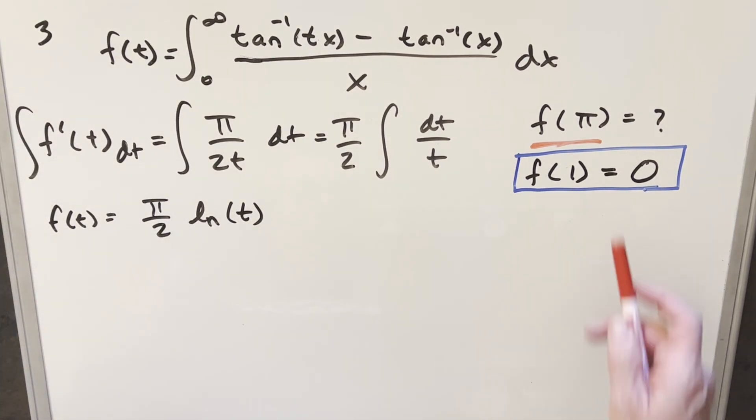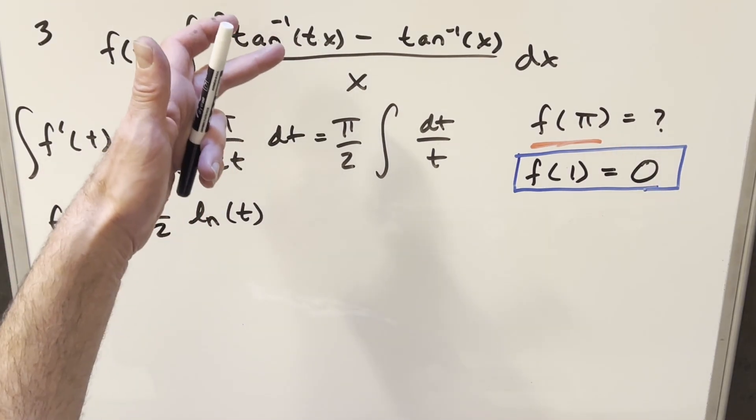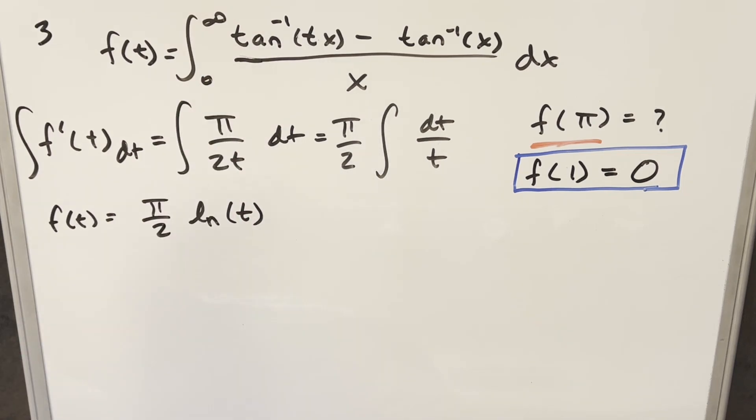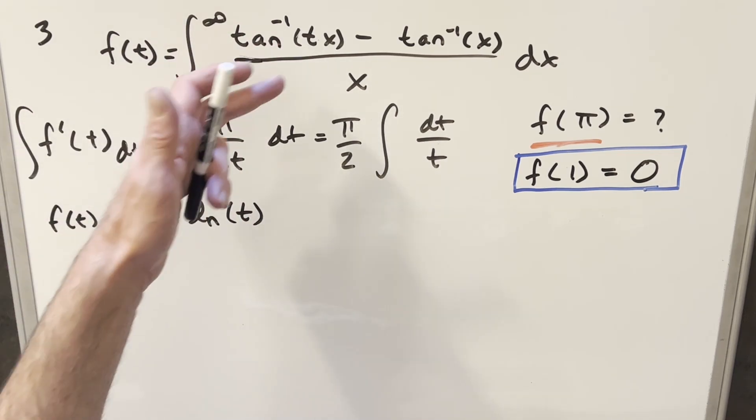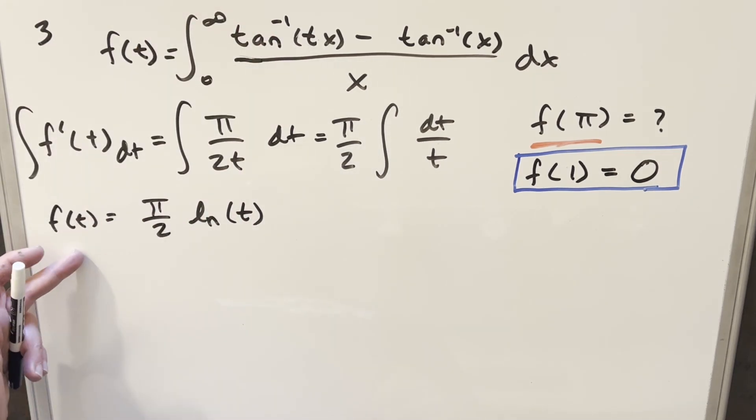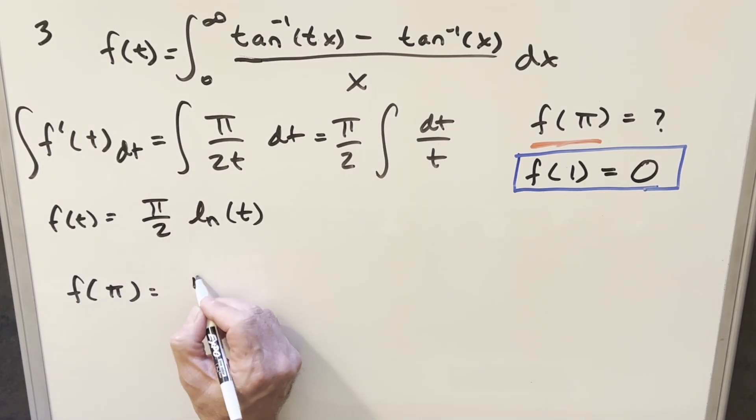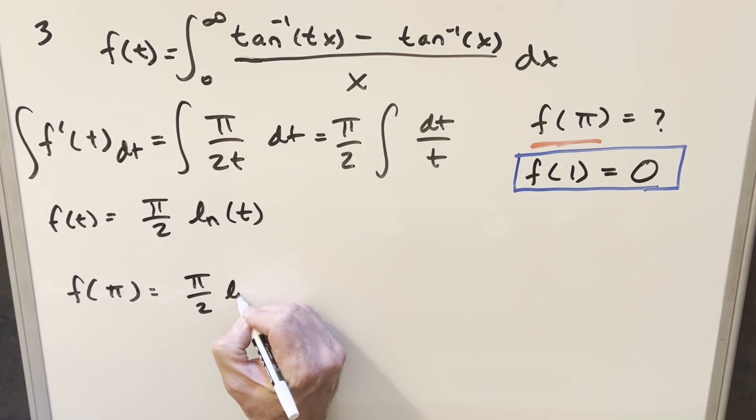And so now all we need to do to finish it off is we just need to come back and find our f of π value. And notice if they didn't put a π there, if they put like a 3 there, if they put a lot of different values, t could be something different. You could just evaluate it with this equation here. So just plugging in π for our f of π value, we're going to have π over 2, natural log of π, and that's it.